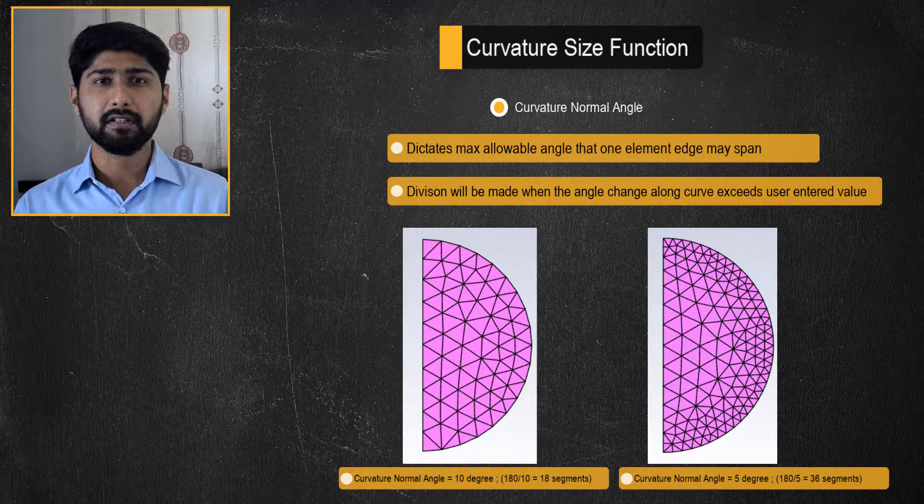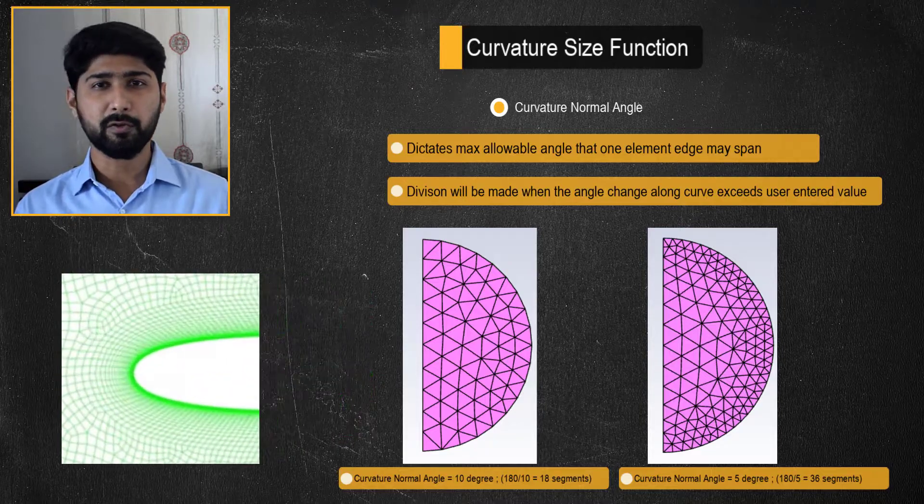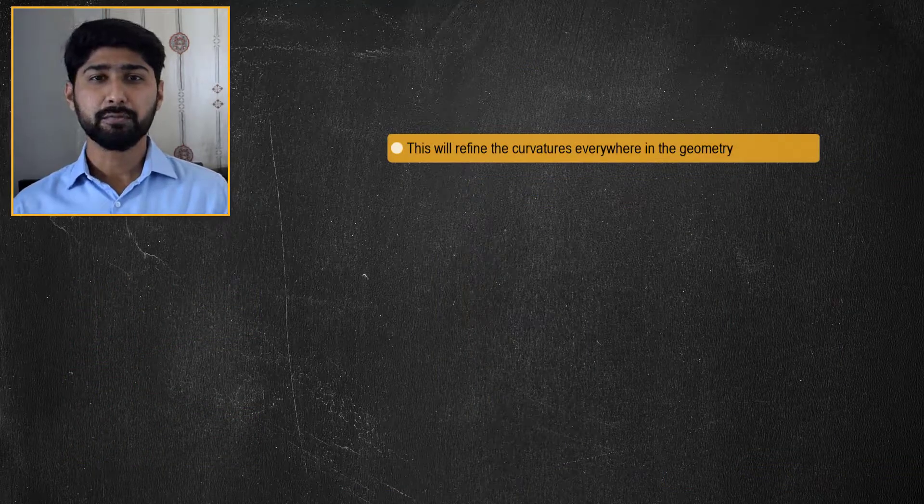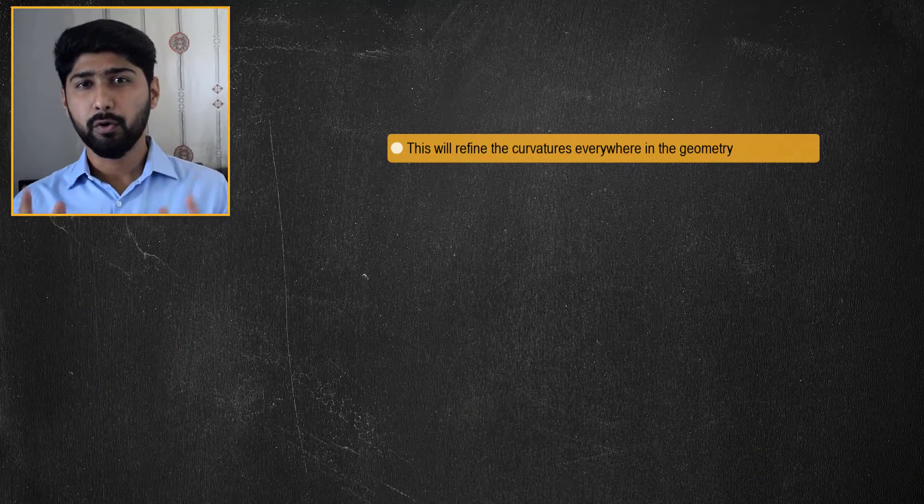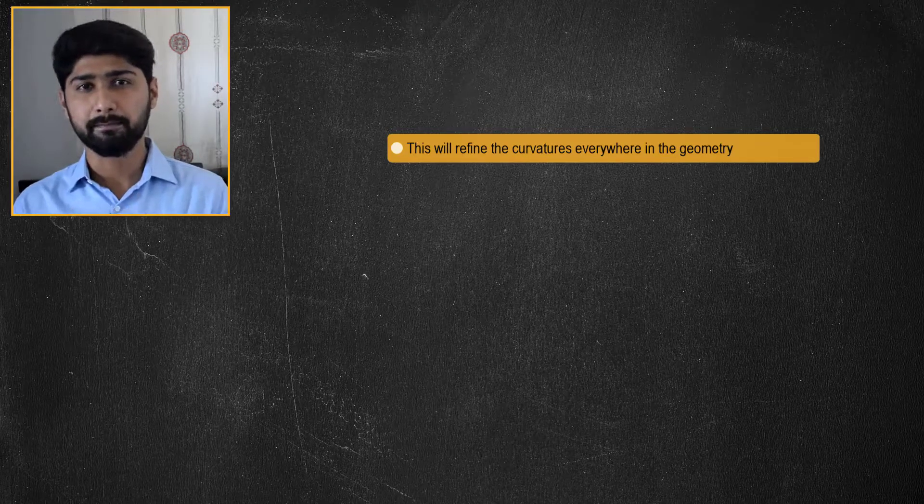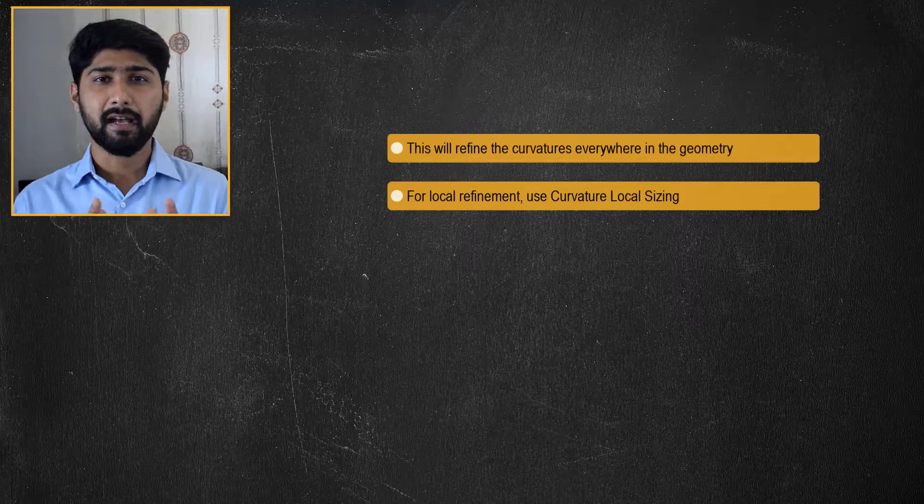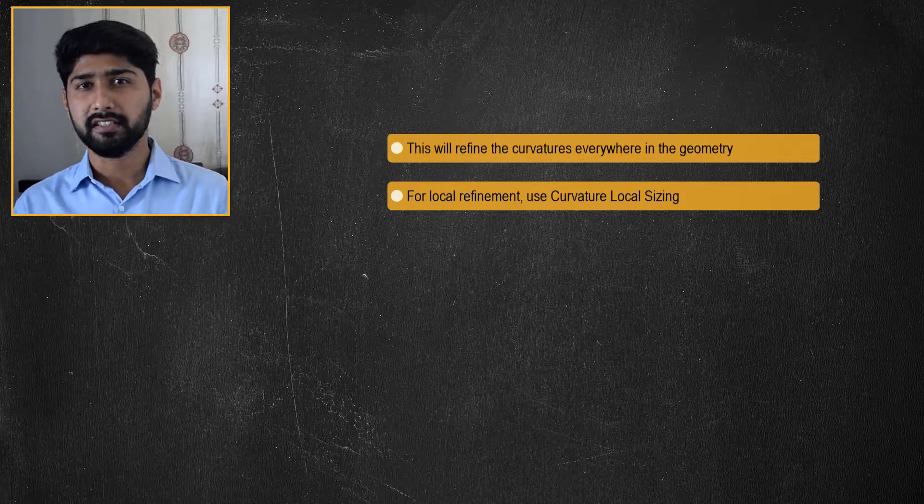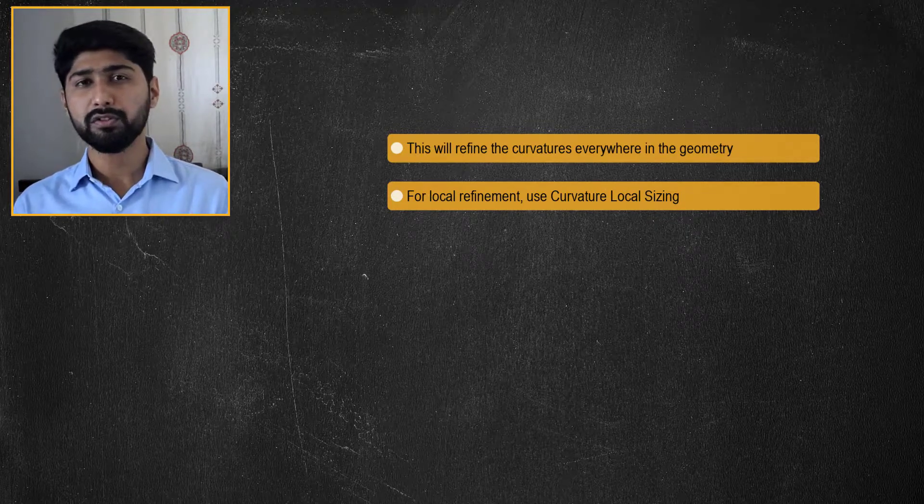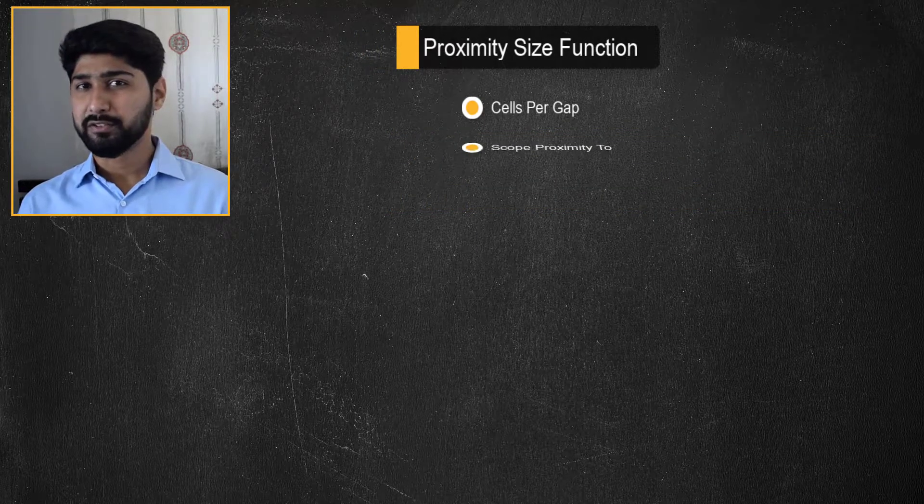This may be necessary to capture the curvature accurately, for example around the leading edge of an airfoil wing in external aerodynamic analysis. Caution needs to be taken as this is a global size function and will refine the curvature everywhere in the geometry leading to an increased computational effort. If a localized capture of a curvature is desired, it may be useful to apply the curvature local sizing to those selected geometrical entities.